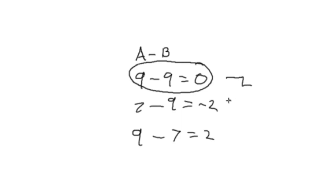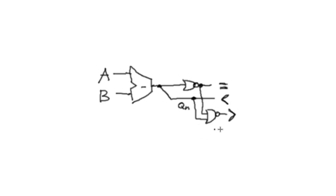A number is either going to be 0, or negative, or neither — in which case it's clearly positive. So we don't need to create a separate circuit to check for a positive integer. All we need to do is check that both the equal and less-than conditions are false. We can do that by feeding them through a NOR gate. This NOR gate will be off anytime either one of those signals is on, and on only when both signals are off. If it's equal, it's not greater than. If it's less than, it's not greater than. But if it's neither equal nor less than, it must be greater than.